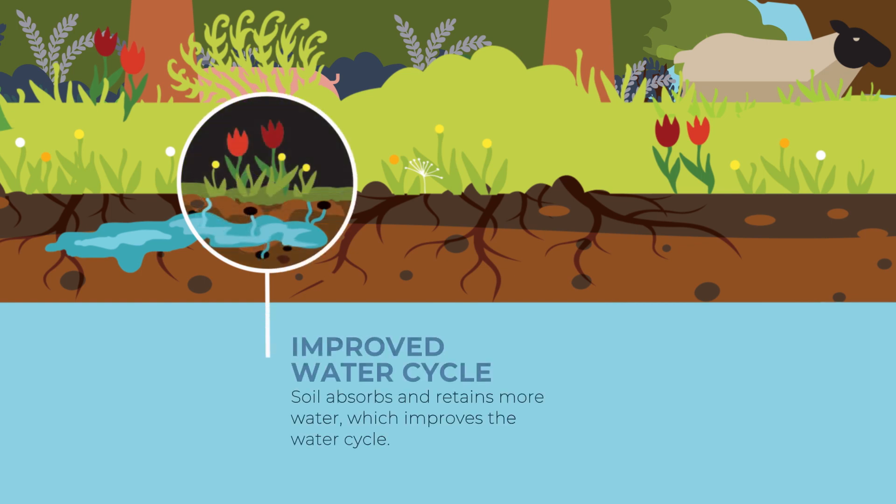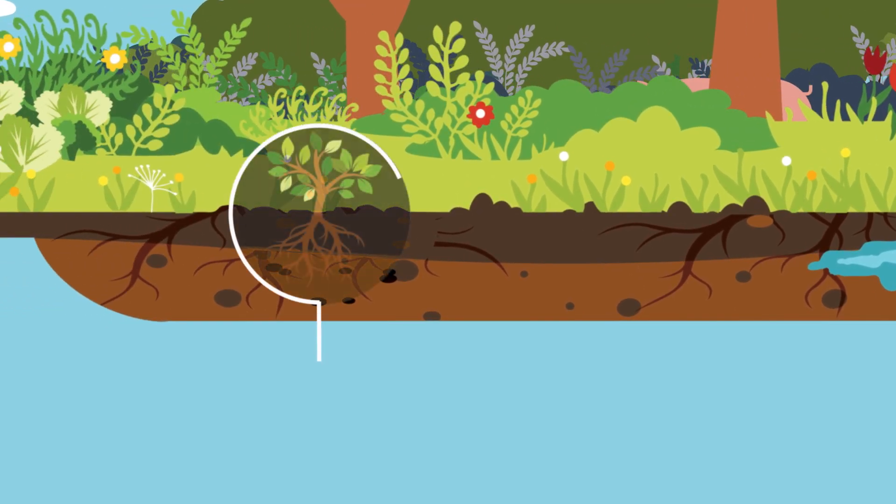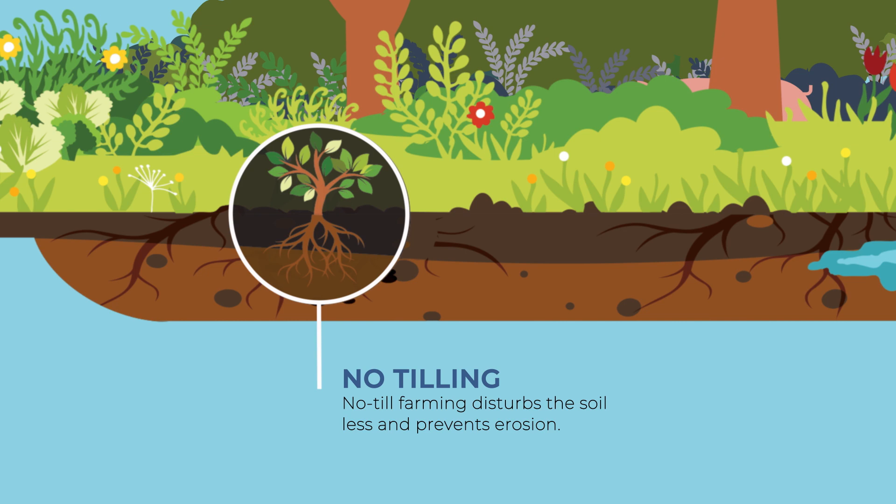Healthy soil is part of the water cycle. It's absorbent and prevents runoff and erosion. No-till farming also prevents erosion while keeping carbon where it belongs, in the ground.